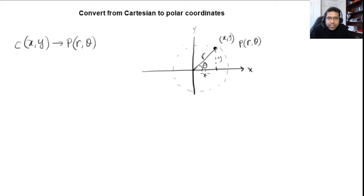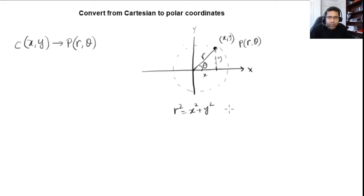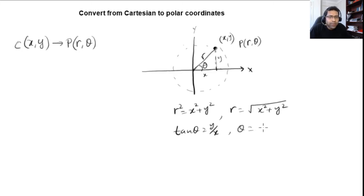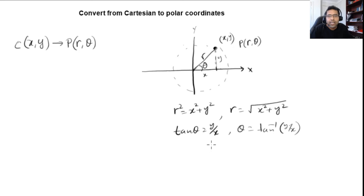Looking at the right-angle triangle, we can relate x, y, r, and theta. Using the Pythagorean theorem: r² = x² + y², so r = √(x² + y²). For theta, using the trigonometric function tan(theta) = opposite/adjacent = y/x, so theta = tan⁻¹(y/x). These two equations help us get polar coordinates from Cartesian coordinates.